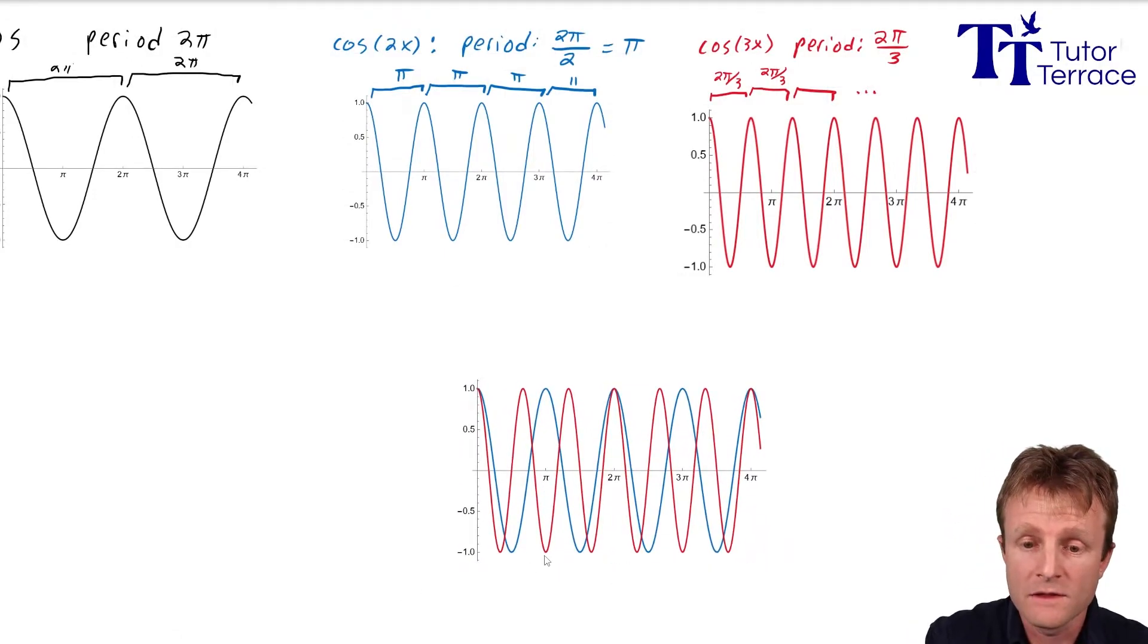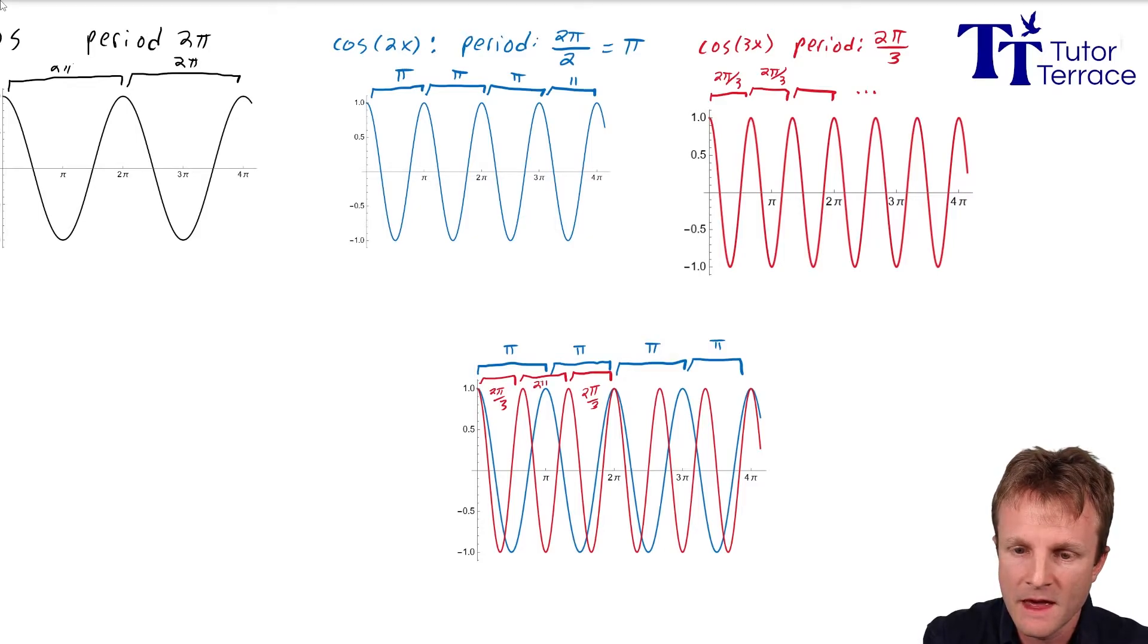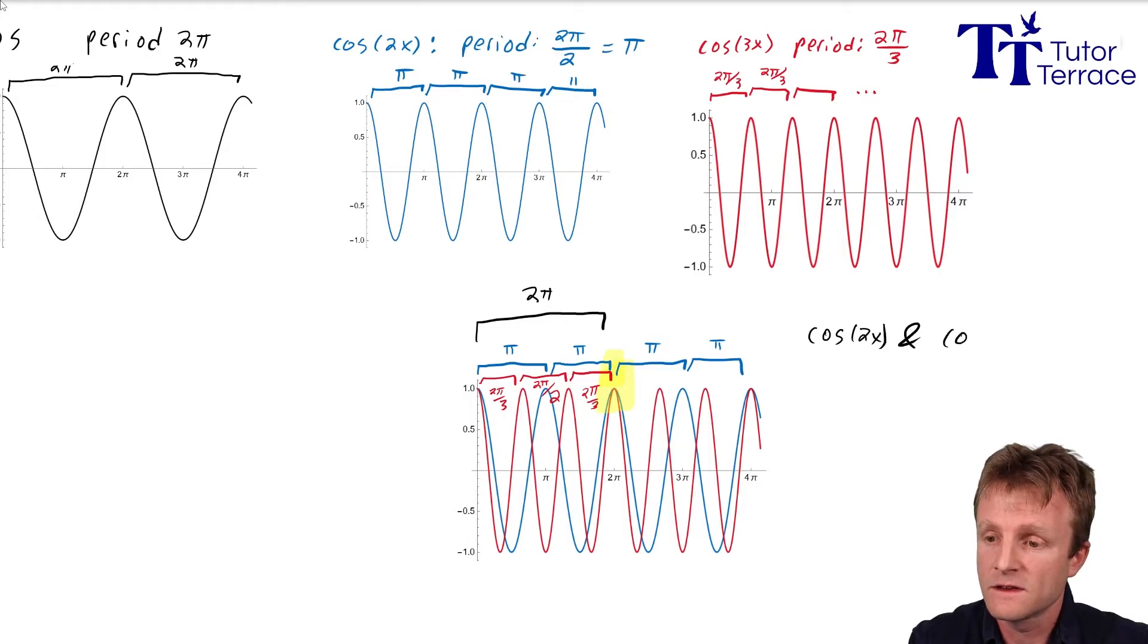And let's think about how the periods line up. So I can again draw the blue periods, which are π. And I can draw that for all of the range that I'm showing. And I can again draw the red periods, which are 2π over 3. And look what happens. Right here, after three of the red periods and only two of the blue periods, right here we've found a common period. They both have period 2π.